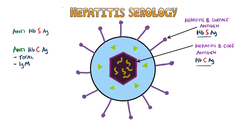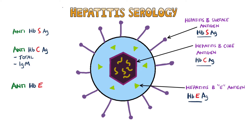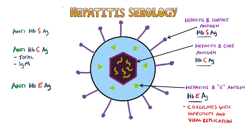These are the main markers that are used when diagnosing hepatitis B. We can also use the hepatitis B E antigen, which exists between the surface and the core of the virus, as well as antibodies against this hepatitis B E antigen. The level of hepatitis B E antigen correlates with the infectivity of the person carrying hepatitis B, and also correlates with the activity of viral replication. Presence of anti-hepatitis B E antigen antibodies indicates inactivity of the virus and low infectivity.